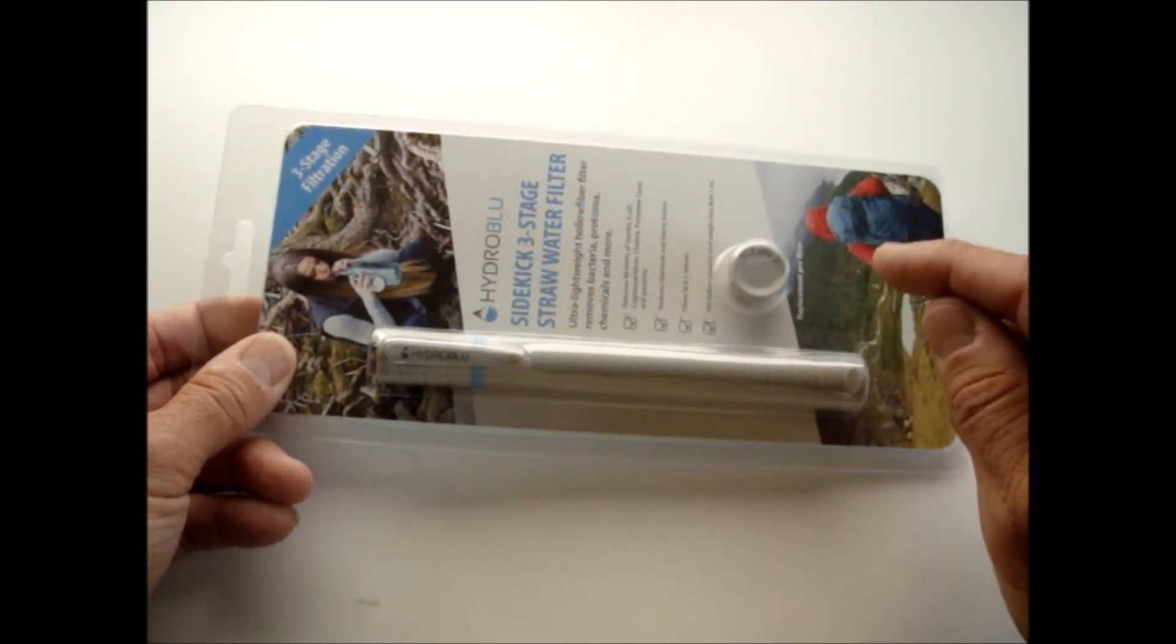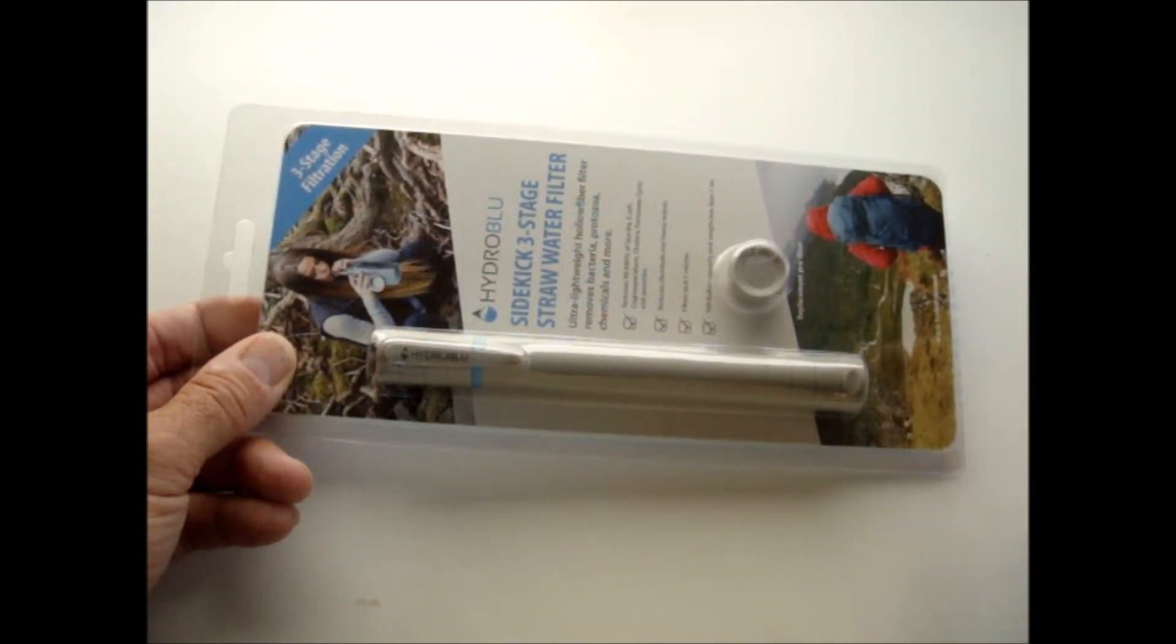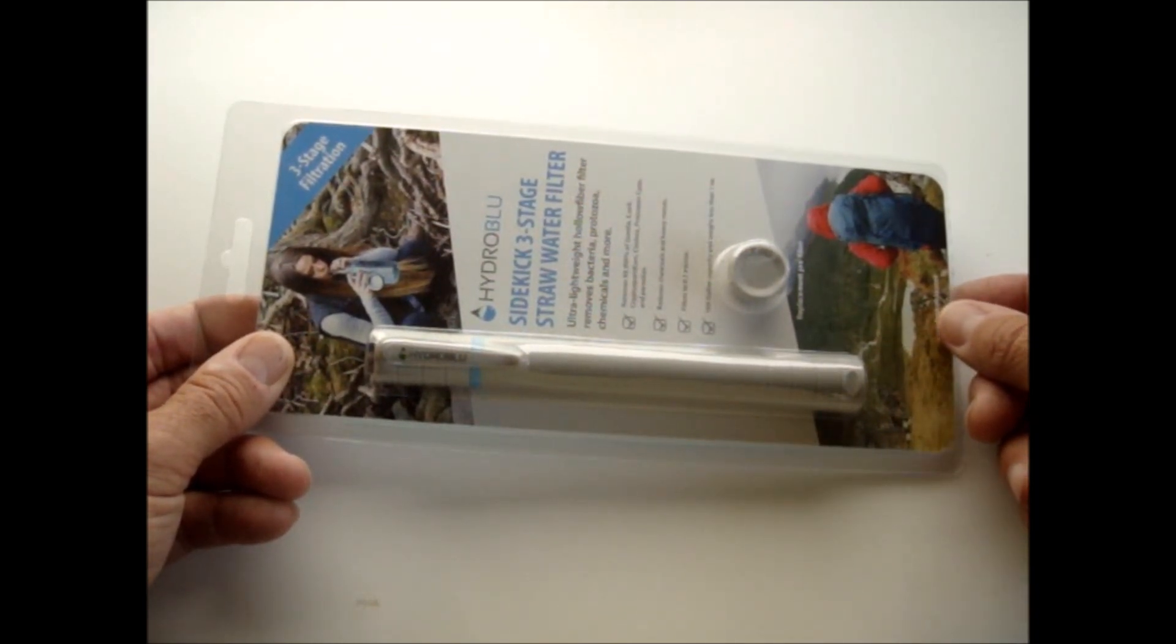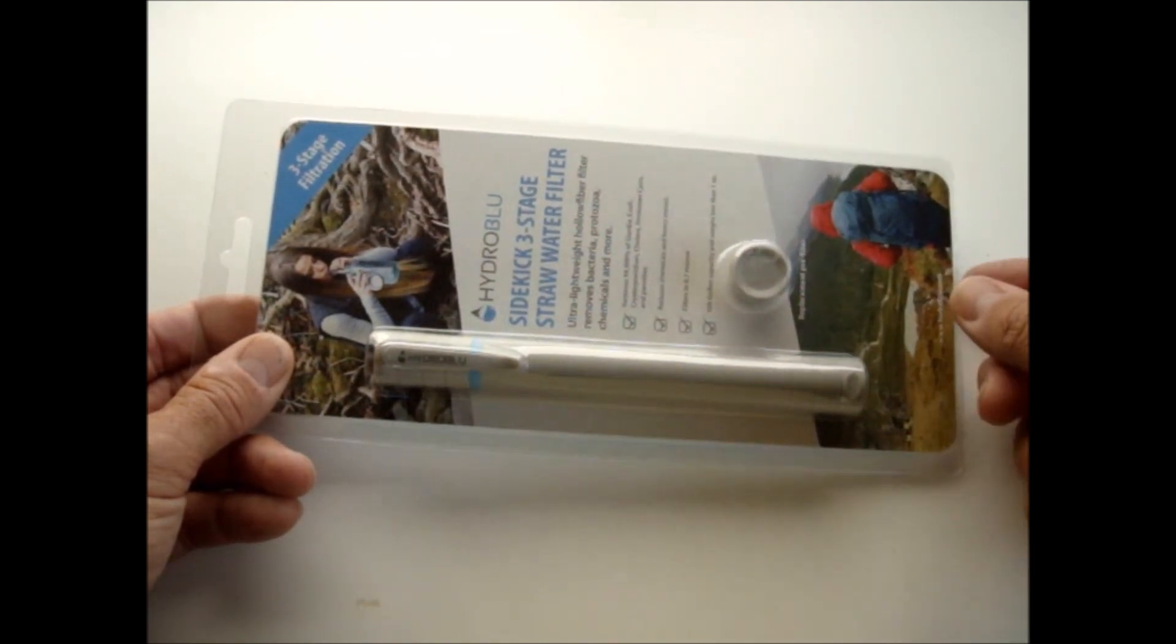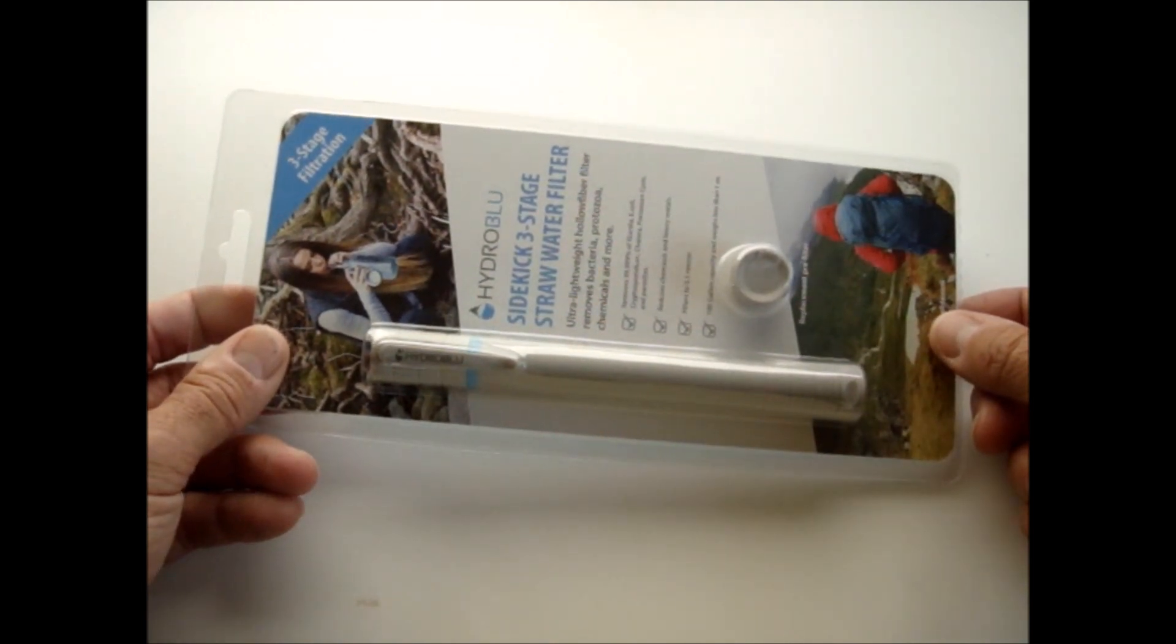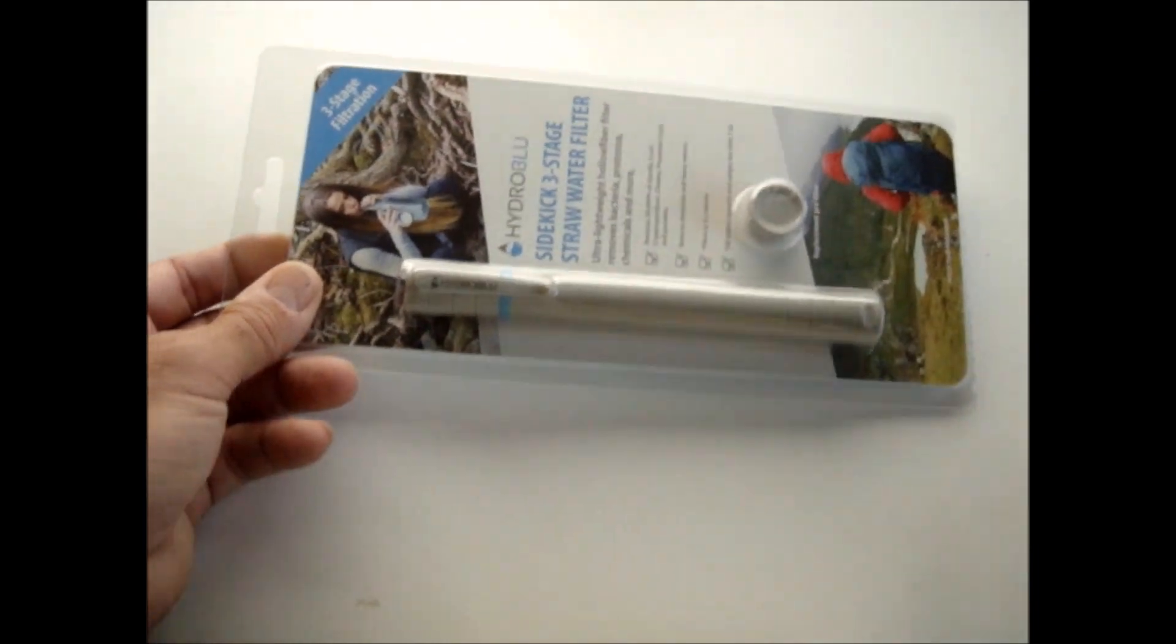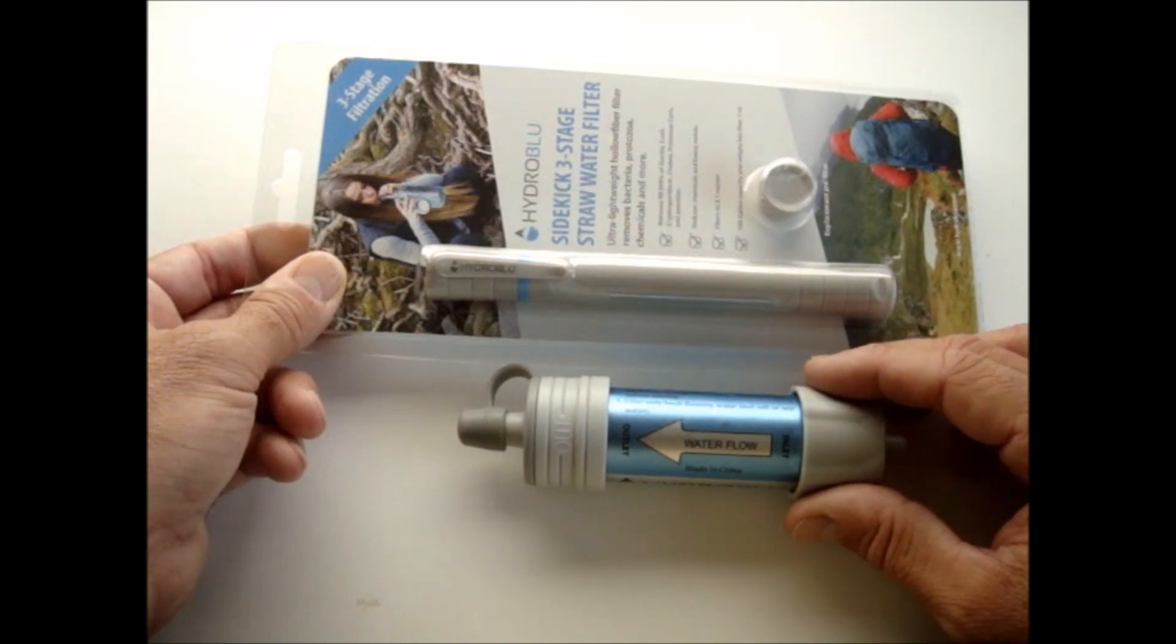This filter will eliminate silt and bacteria and things like that. Because of the activated charcoal, it'll also remove a little bit of chemical or taste from the water, but it's still not something that will filter out viruses. These kinds of filters are perfect in an environment like the one where I hike.